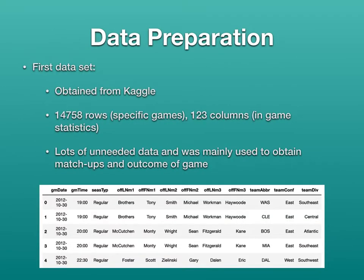For data preparation, I looked at two datasets. The first dataset I obtained from Kaggle had about 15,000 rows and 123 columns. This dataset really had a lot of unneeded data — it was mainly used to obtain the matchups from specific games, the date of the games, and the outcome of the games. The rest of the data was in-game statistics, which can't be used to help predict the game since it was what happened during the game.